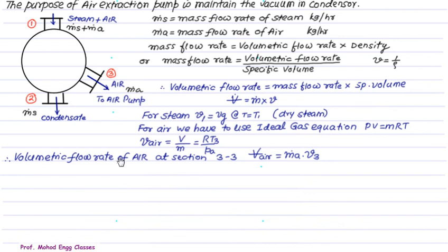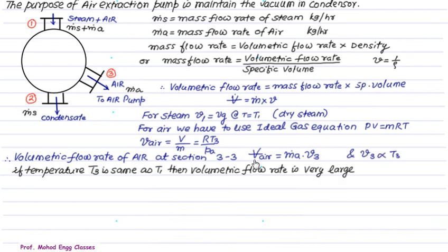So R is the gas constant 287, T3 is the temperature at section 3, and PA is the partial pressure of air at section 3. The volumetric flow rate of air therefore, using this formula, V bar dot air is equal to mass of air into specific volume of air, which is equal to this quantity. From this equation it is very clear that the specific volume of air is directly proportional to temperature T3, and therefore volume of air is also directly proportional to temperature T3. If there is no cooling provided near this section, the temperature of T3 is same as T1, and therefore volumetric flow rate is very large.